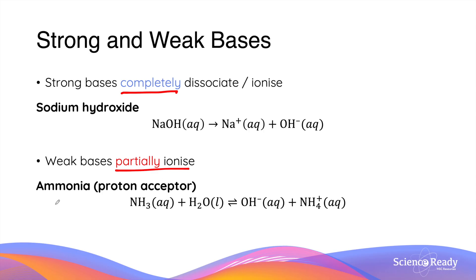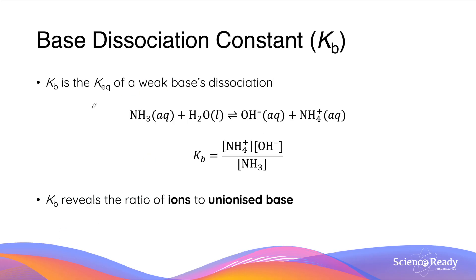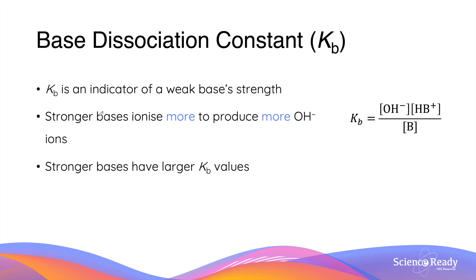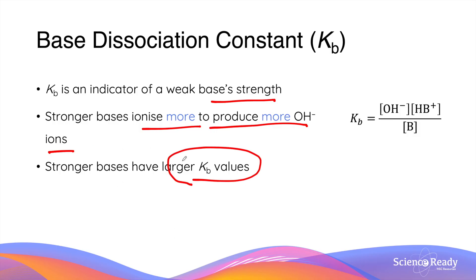A common and good example of a weak Bronsted-Lowry base is ammonia, NH3. The base dissociation constant Kb is the equilibrium constant of a weak base's ionization. Using ammonia as an example, it is expressed as the concentration of ammonium and hydroxide ions divided by the reactant ammonia. Since the amount of solvent — that is, the water — is usually present in relatively large quantities and thus remains relatively constant, it is not included in the dissociation or ionization constant expression. Like Ka, Kb reveals the ratio of the ions to the unionized base, that is the ammonia in this case. As a result, Kb is an indicator of a base's strength. As stronger bases ionize more to produce more hydroxide ions, they have a larger Kb value.